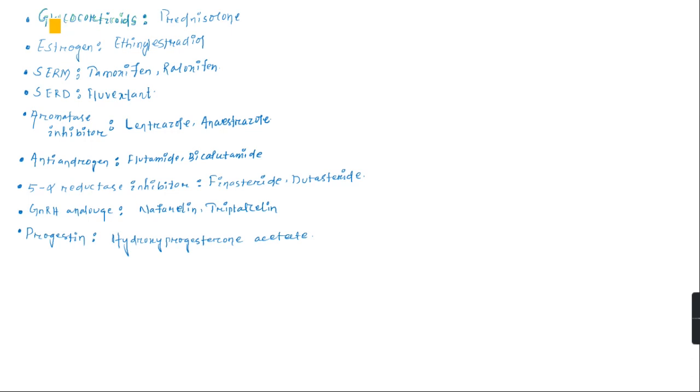Hormonal drugs, as mentioned, use the PROGESS mnemonic. G for glucocorticoids, example prednisolone. A for anti-androgens: flutamide and bicalutamide. 5-alpha-reductase inhibitors: finasteride and dutasteride. Gonadotropin-releasing hormone analogs: nafarelin and triptorelin. Progestin analogs: hydroxyprogesterone.